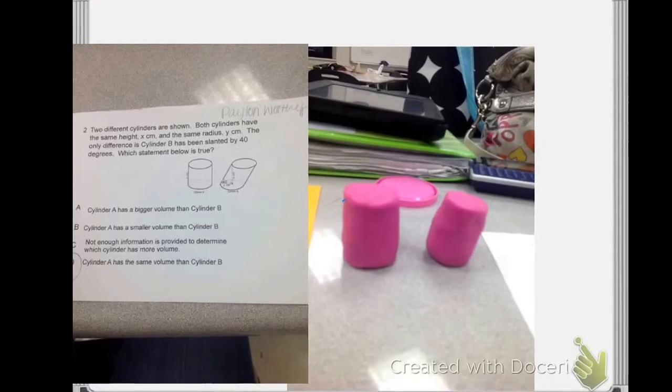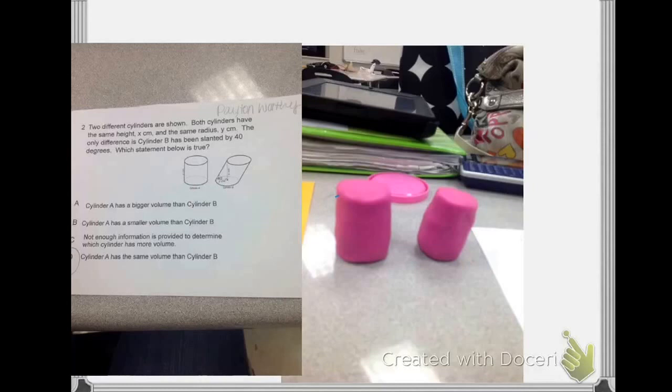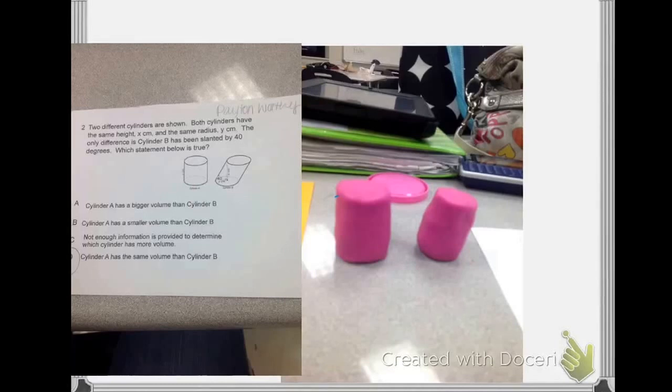My problem says two different cylinders are shown. Both cylinders have the same height, x centimeters, and the same radius. The only difference is cylinder B has been slanted by 40 degrees. Which statement below is true?